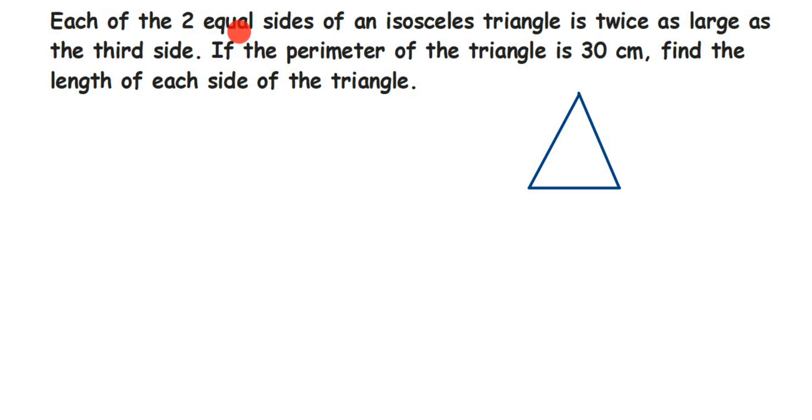each of the two equal sides of an isosceles triangle is twice as large as the third side. If the perimeter of the triangle is 30 cm,